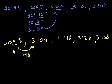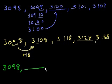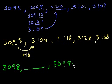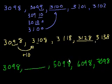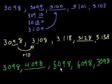Starting with the same number 3,098, then blank, then 5,098, 6,098, 7,098. I encourage you to pause and try it yourself. Looking at the pattern — 5,098, 6,098, 7,098 — we're increasing the thousands by 1 each time, adding 1,000. So the blank is 4,098.